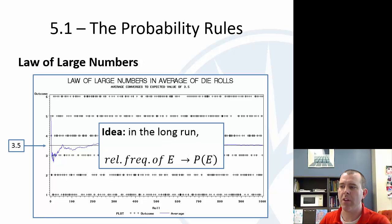So the idea here for the law of large numbers is that in the long run, the relative frequency, the empirical relative frequency from looking at it, will equal the probability.